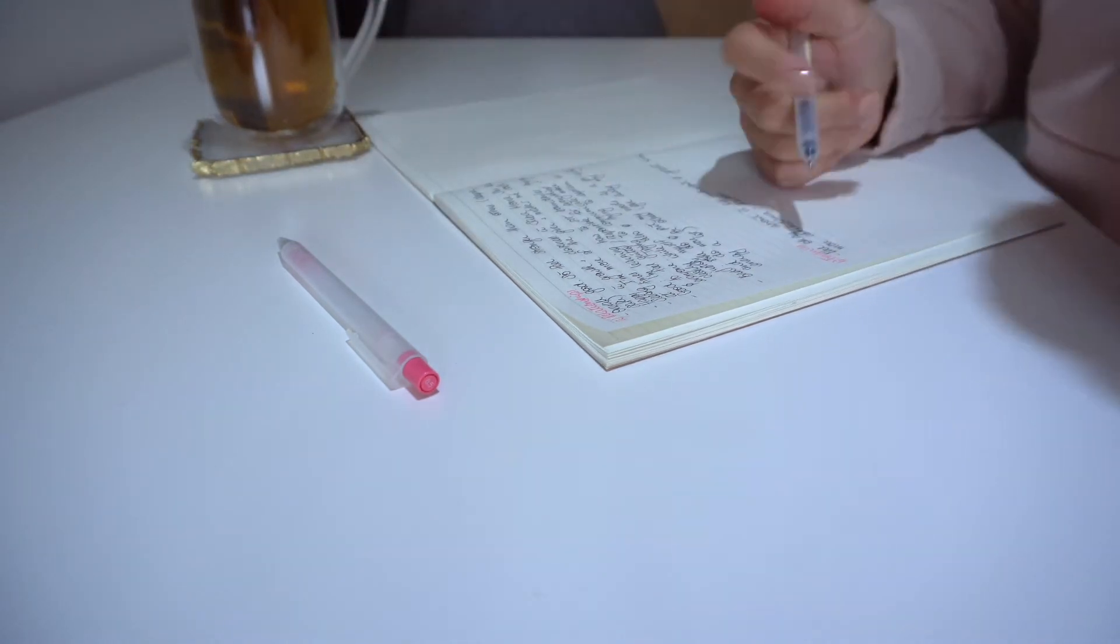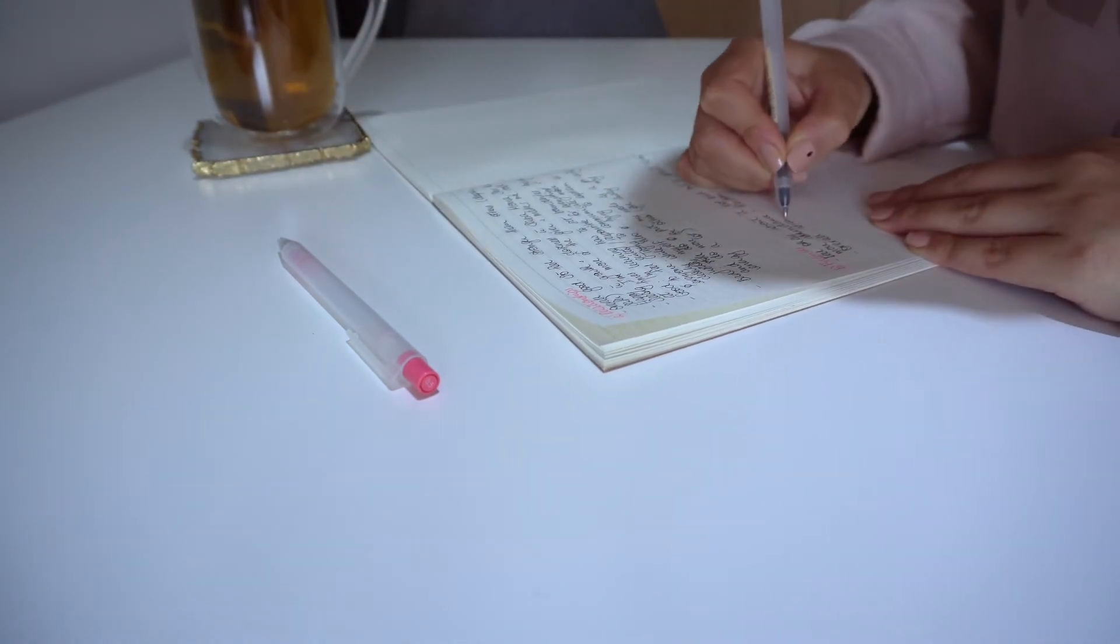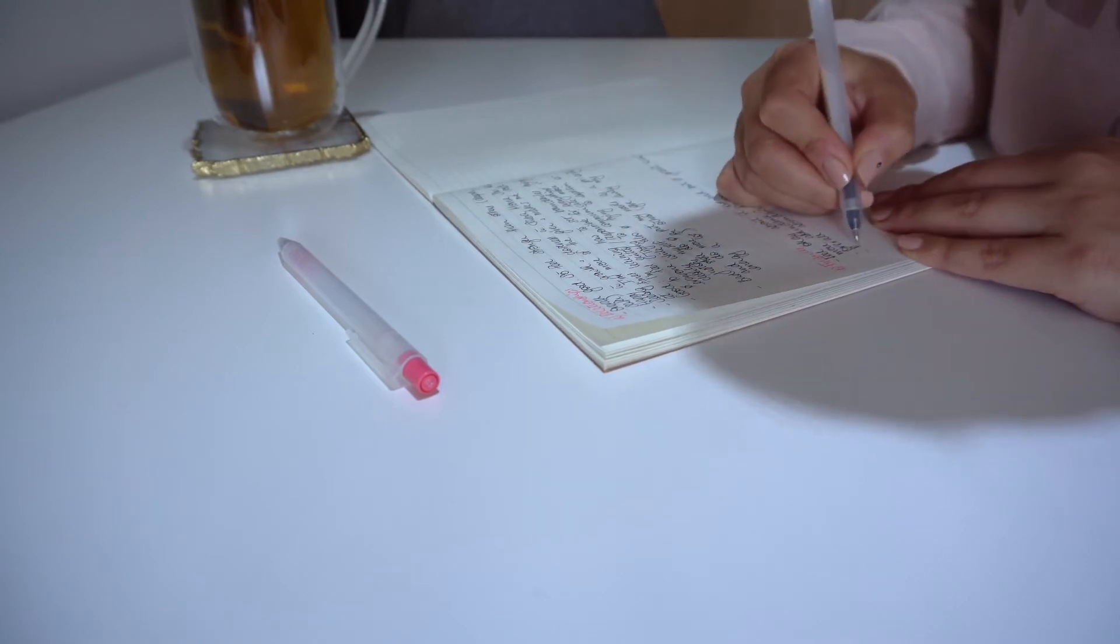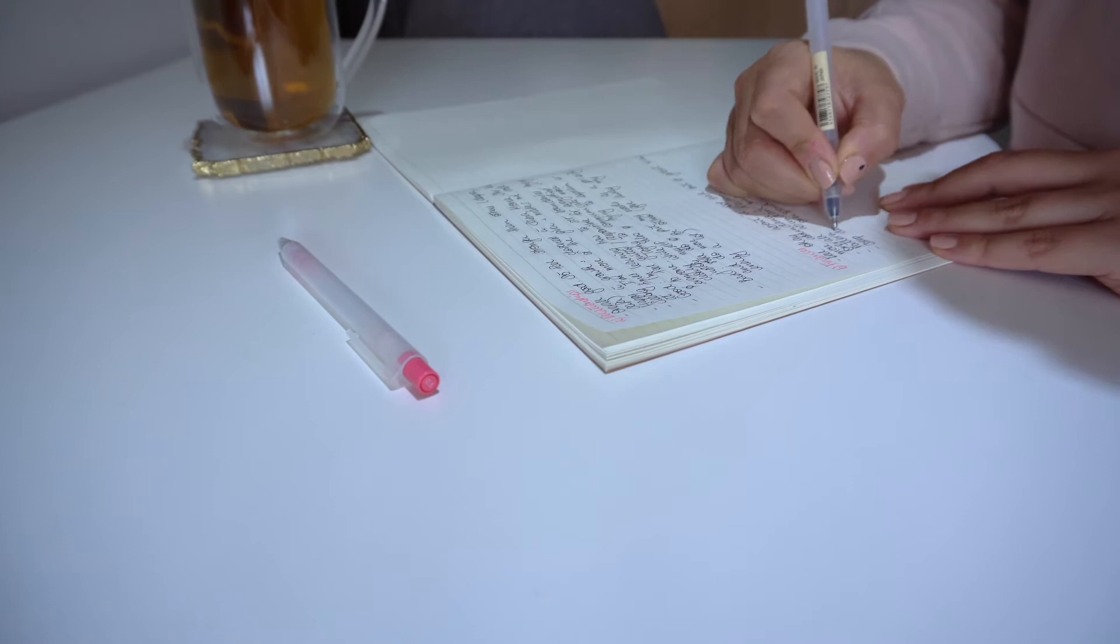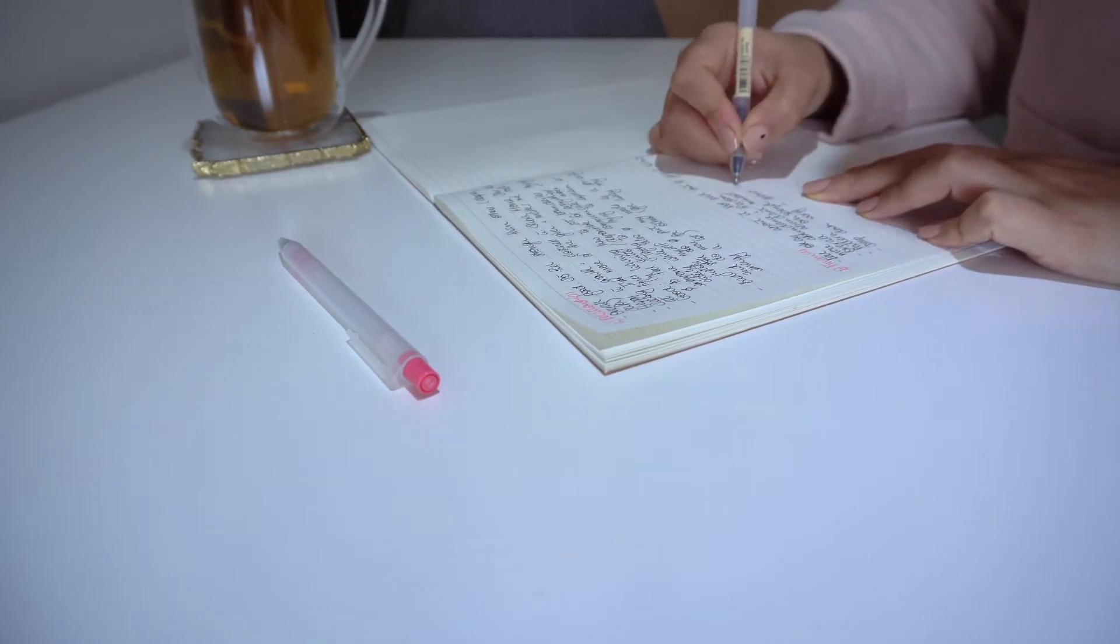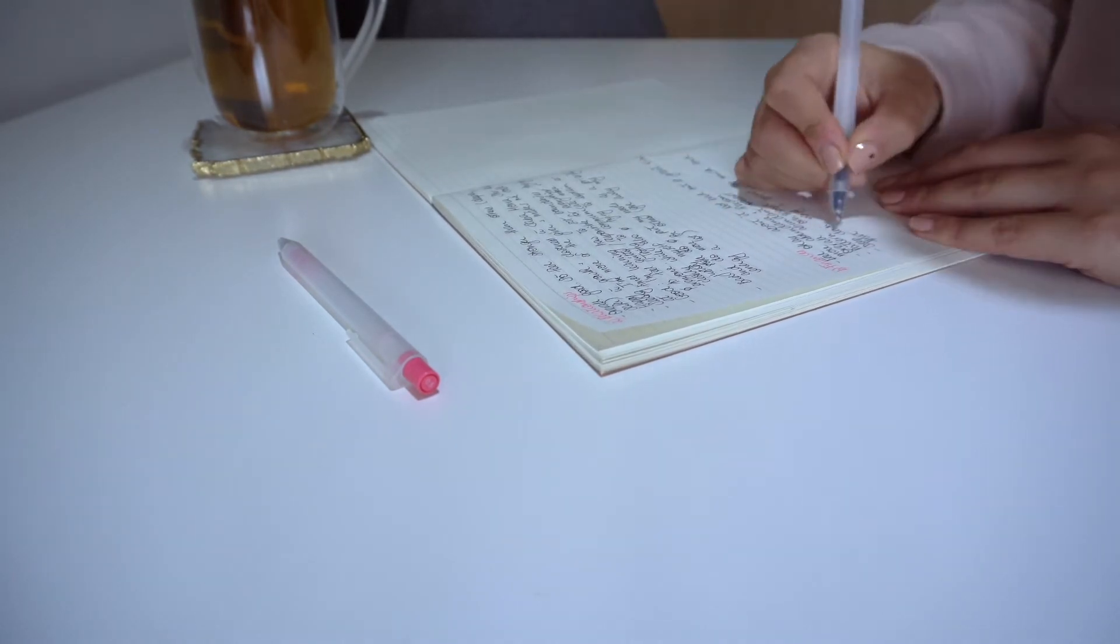You can also look back at your planner to remind yourself of what you did this month, or look at the pictures on your phone to remember what you did. Write down at least three good memories from this past month, even if they might seem small.